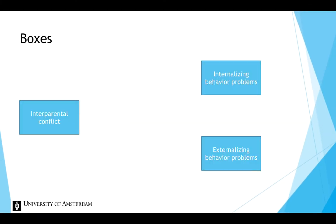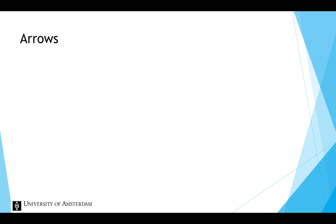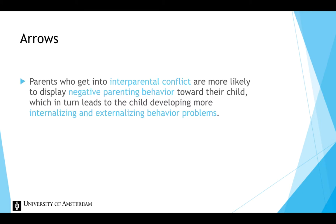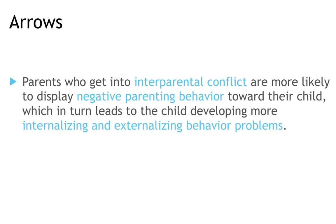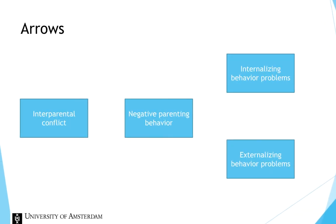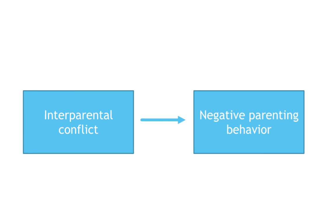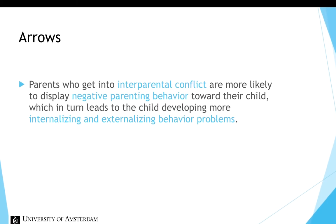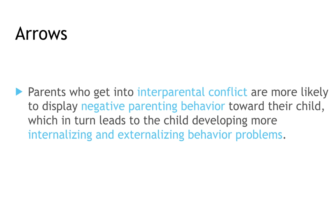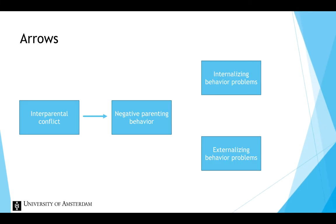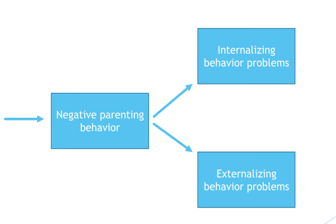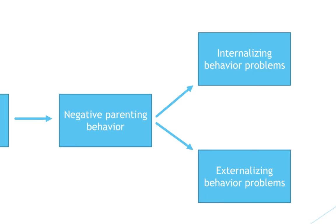The conceptual model already consisted of three boxes and now we can put the additional variable in a box. Just like before, we can draw arrows that represent causal effects. In this example, inter-parental conflict has an effect on negative parenting behavior. We can add an arrow pointing from inter-parental conflict to negative parenting behavior. In turn, negative parenting behavior has an effect on internalizing and externalizing behavior problems. We add two arrows pointing from negative parenting behavior to internalizing and externalizing behavior problems.